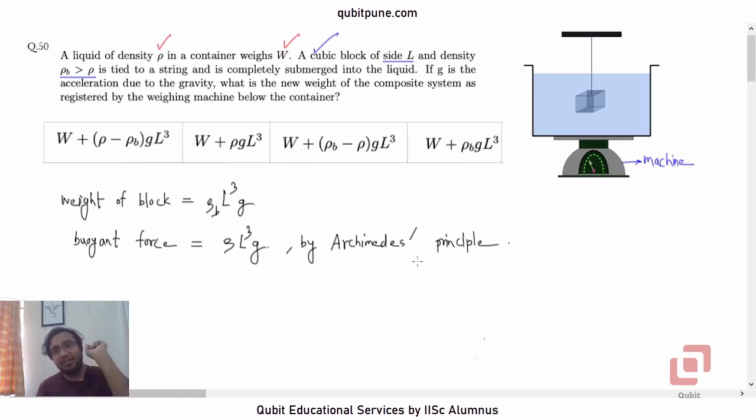Now there is another force acting on the block, and that is the tension in the string. So if we decide to draw the free body diagram of the block, then the tension will be upwards. The buoyant force will also be upwards given by ρL³g. And the weight of the block will be acting downwards, that is ρ_BL³g. This is the free body diagram of the block. So can you calculate the tension now?